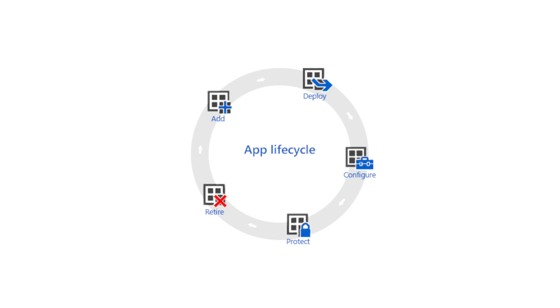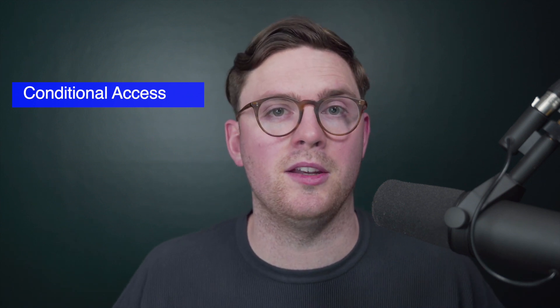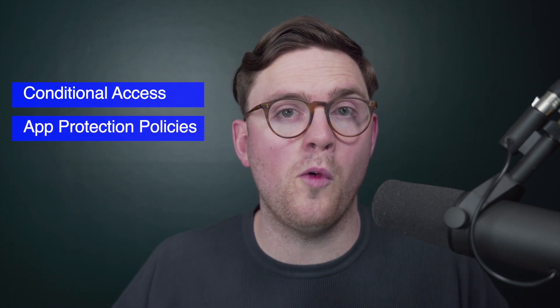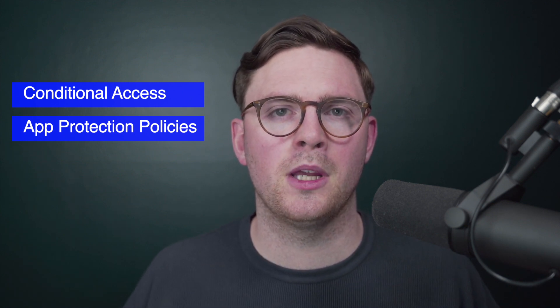Mobile application management allows us to publish, push, configure, and protect applications on a device. Importantly, it's also about how we protect applications and the data within them. As part of mobile application management, one way to protect a device is using conditional access — we can secure who has access and how they can access applications. For example, if they're not coming from a compliant or enrolled device, we don't want them to have access to our corporate data.